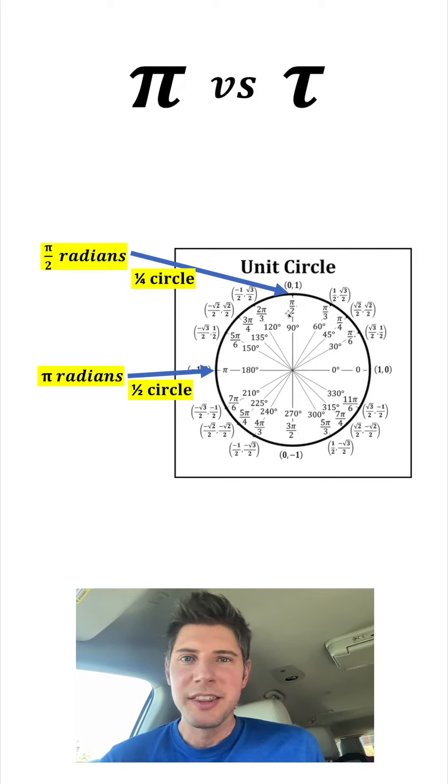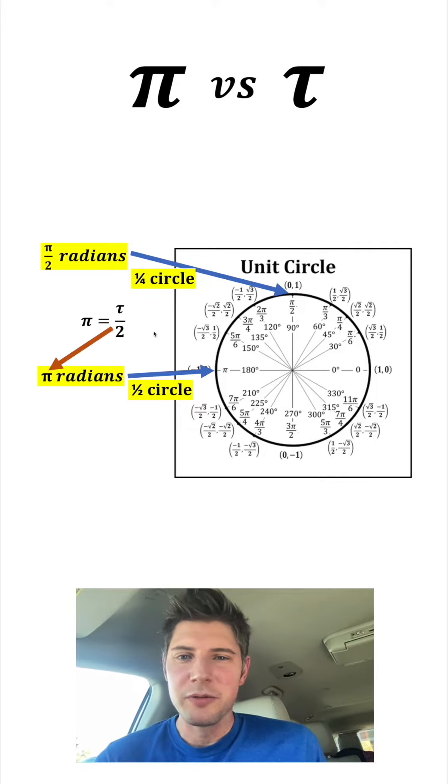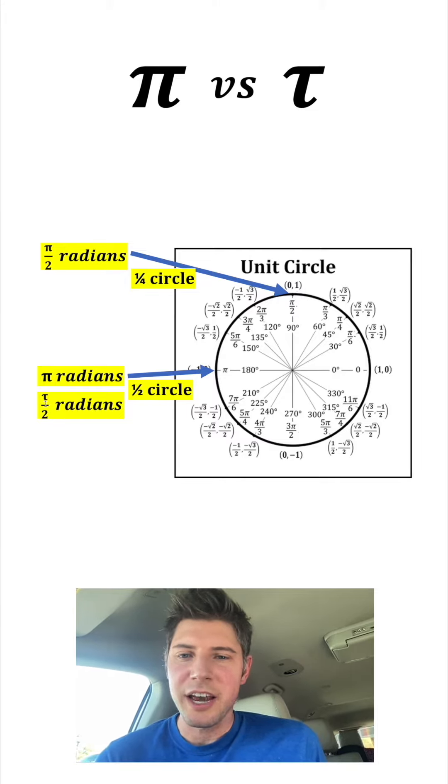Notice how this pi radians is exactly one half of the circle. If we look up here, there's π/2, and that's one fourth of the circle. So let's go back to pi is equal to τ/2. If we plug in τ/2 for the pi, this now becomes τ/2 radians. And that's kind of nice. One half tau, and this is one half of the circle. There's a little bit of symmetry there.